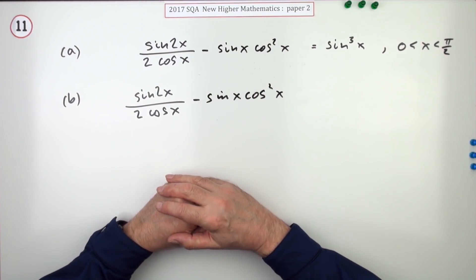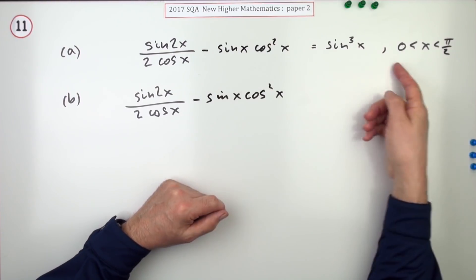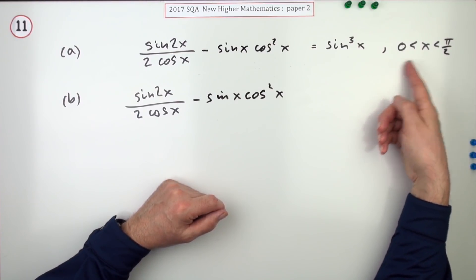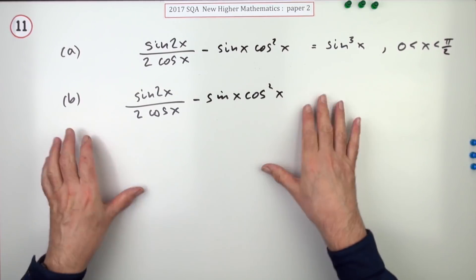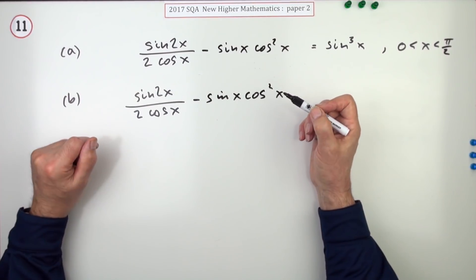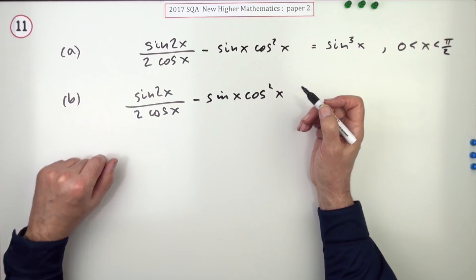So you don't want cos of x to be zero, for instance, and it has to be a one-to-one correspondence. So that's just in the first quadrant. Anyway, differentiate. How you're going to show you're differentiating, because you can't just put equals.